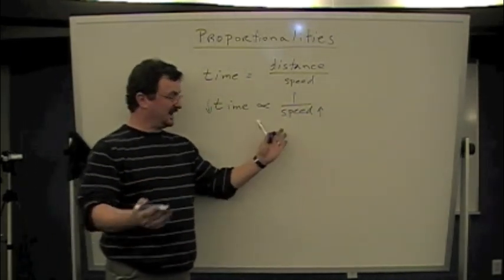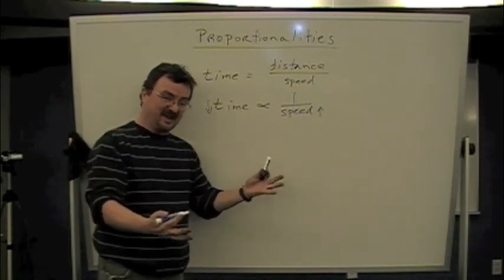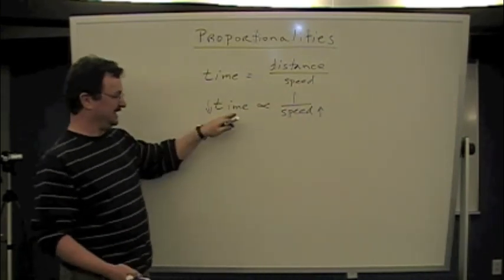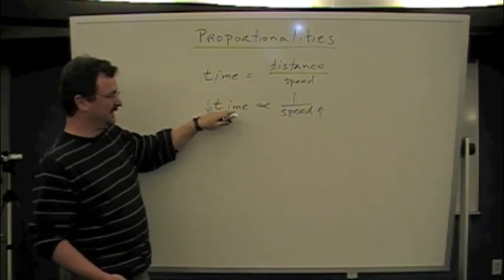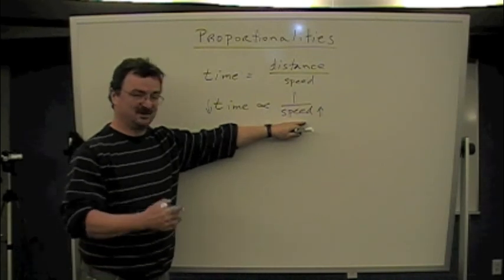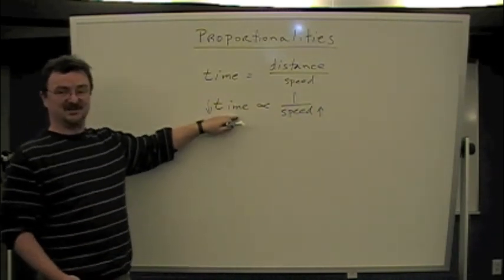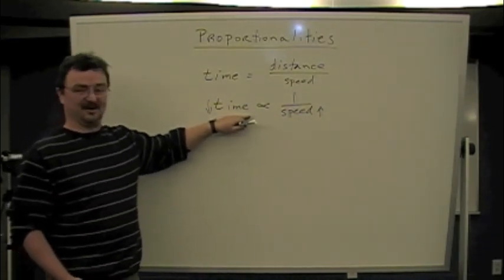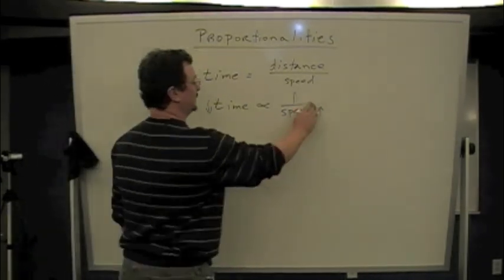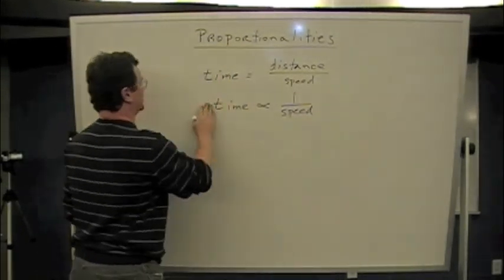Everybody inherently knows this. I know this because people are driving way too fast on the roads. The reason is because of this equation here. They want to get there as fast as possible. They want to reduce their time of travel. So they increase their speed, sometimes to unsafe levels, to reduce the time needed to get from here to there. So the speed goes up, the time goes down. This is called an inverse proportion.